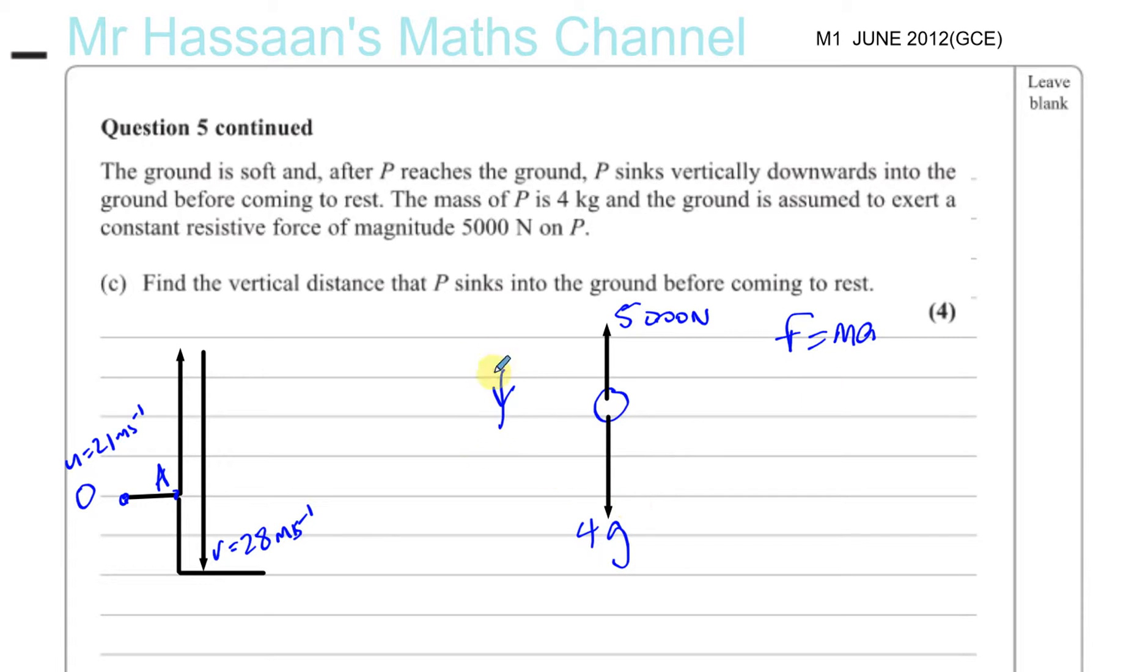As it's going downwards, I'll take down as positive. It's very important that you get this right. Down is positive. So, I'm going to say that 4g minus 5,000, because the 5,000 is acting upwards, is equal to M times A. Now, M is 4 kilograms, so it's 4 times A. This will help us to find what the acceleration is. You've got 4 times 9.8, which is g. Now, g is acting down, and we're taking down as positive. So, this is positive 9.8, because we're acting downwards.